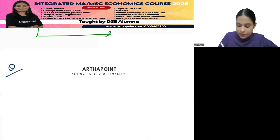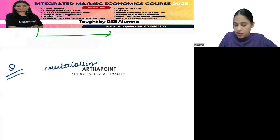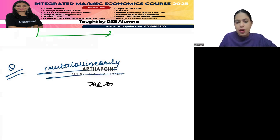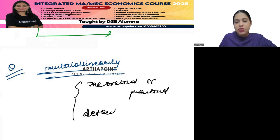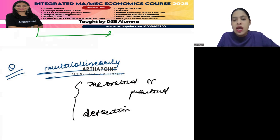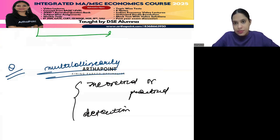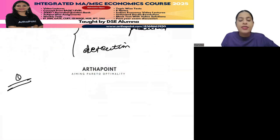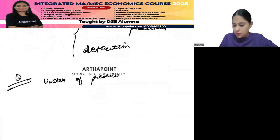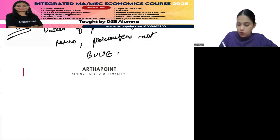The next fixed question in the exam will be on multicollinearity. They will ask about theoretical or practical implications, detection of multicollinearity, and how to resolve the problem. They may also give you statements about heteroscedasticity - for example, under the presence of heteroscedasticity, parameters are no more BLUE.